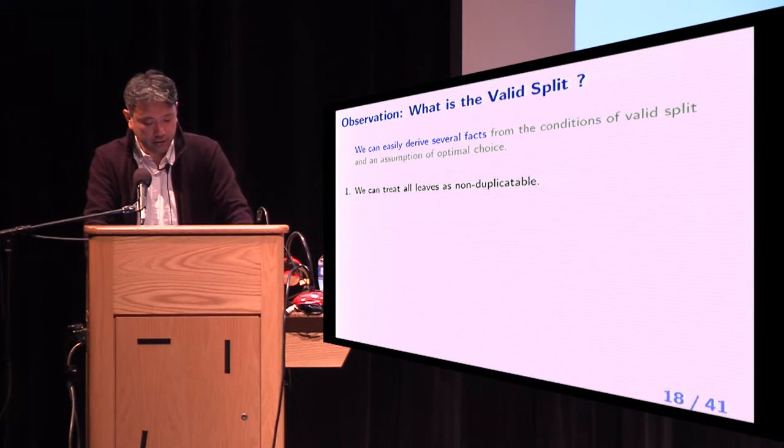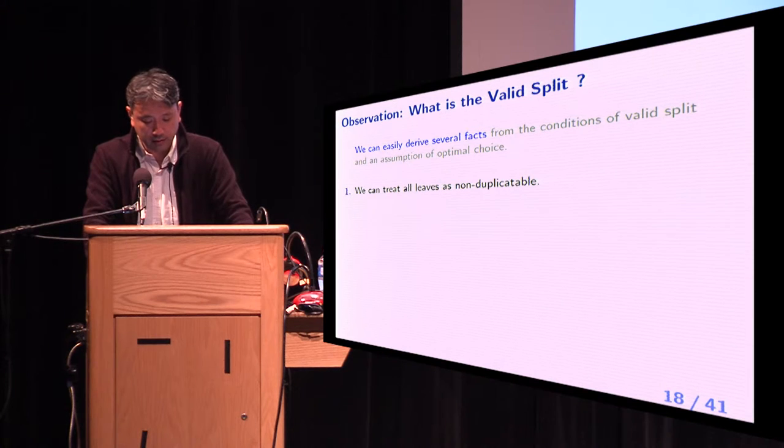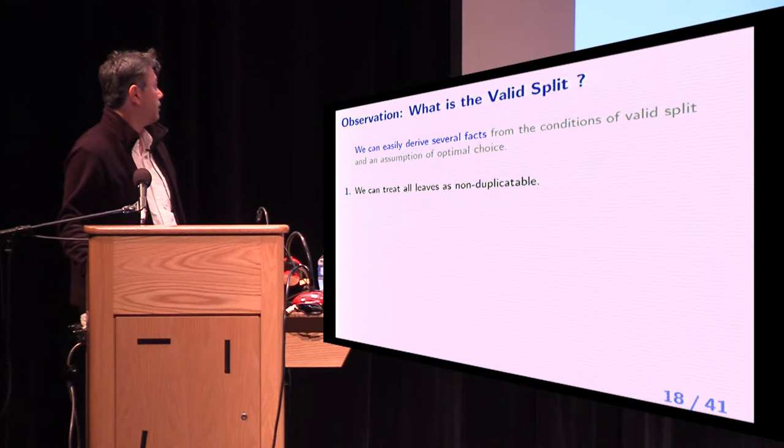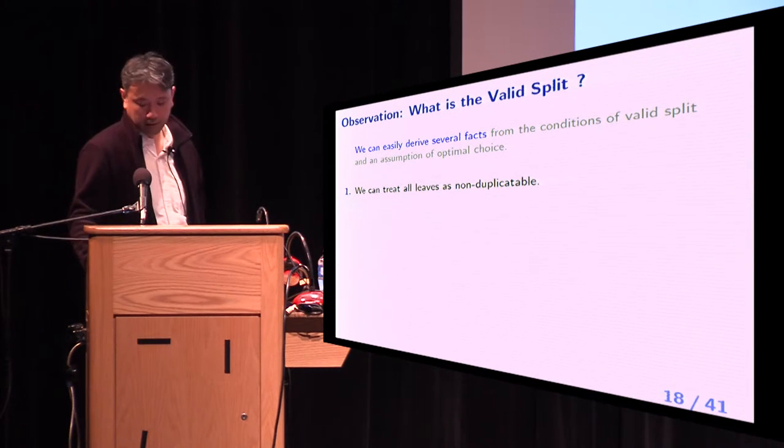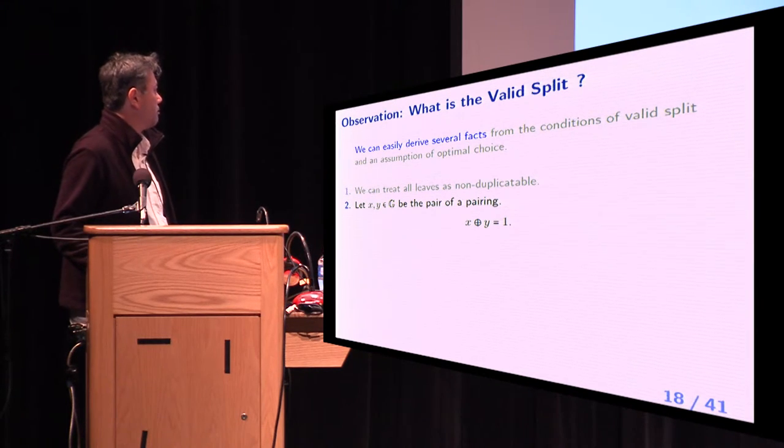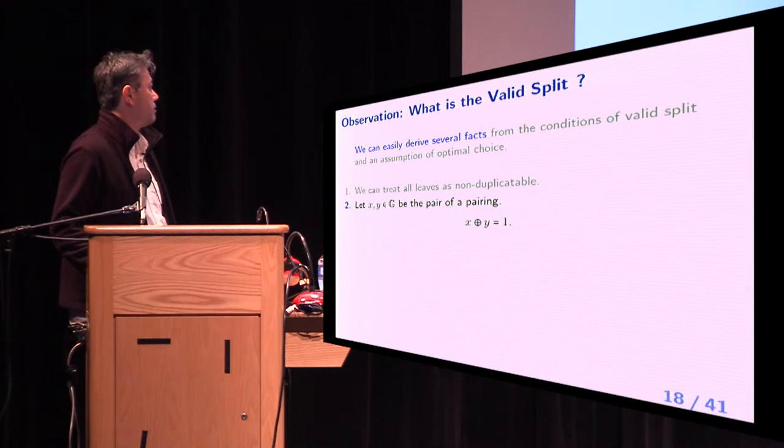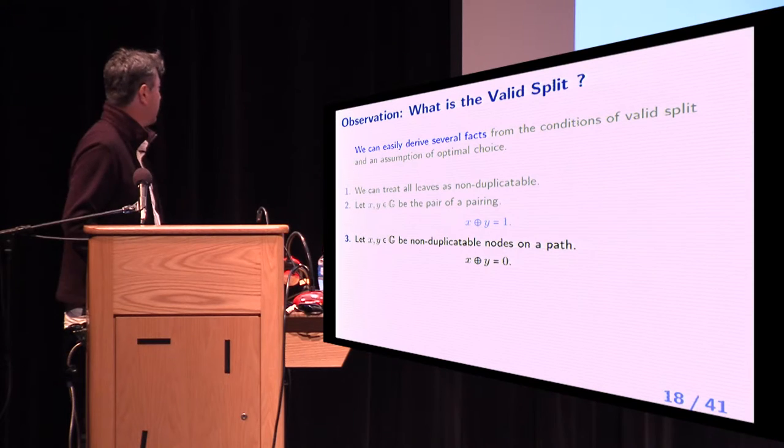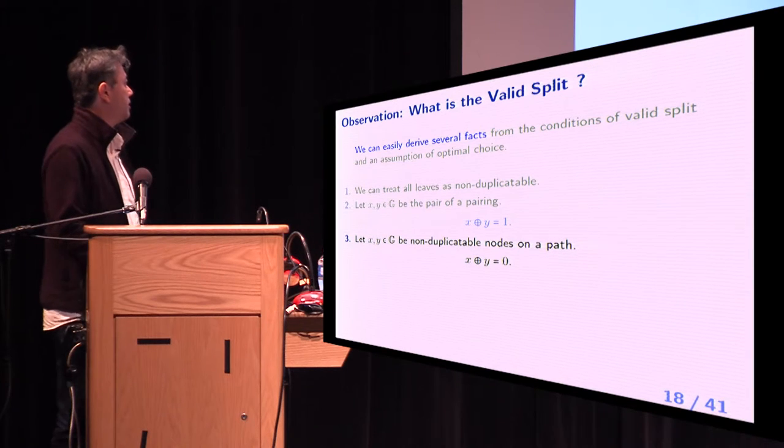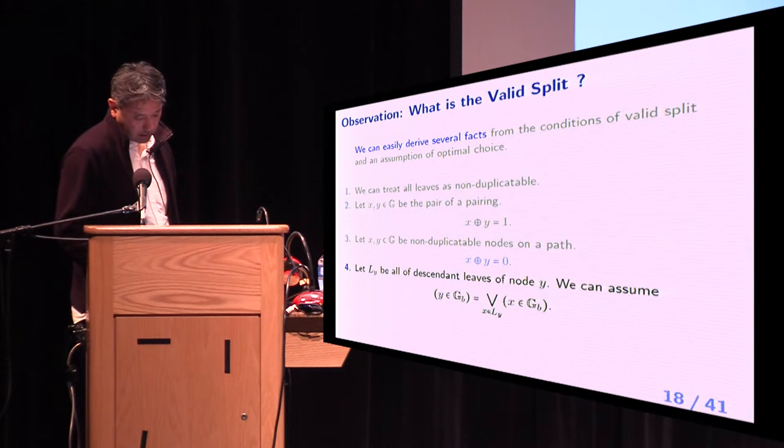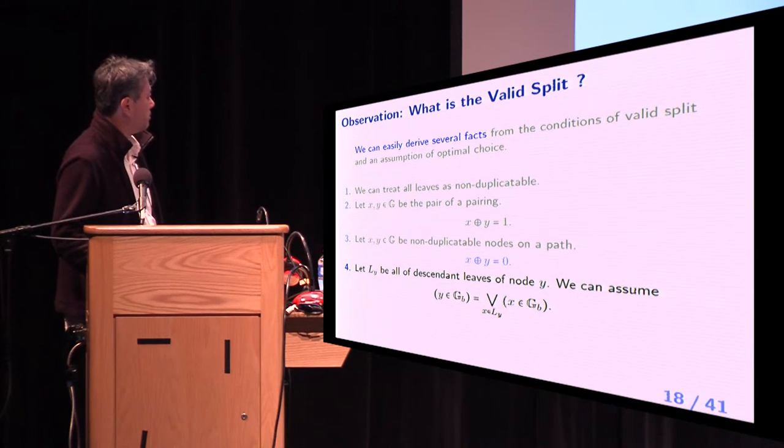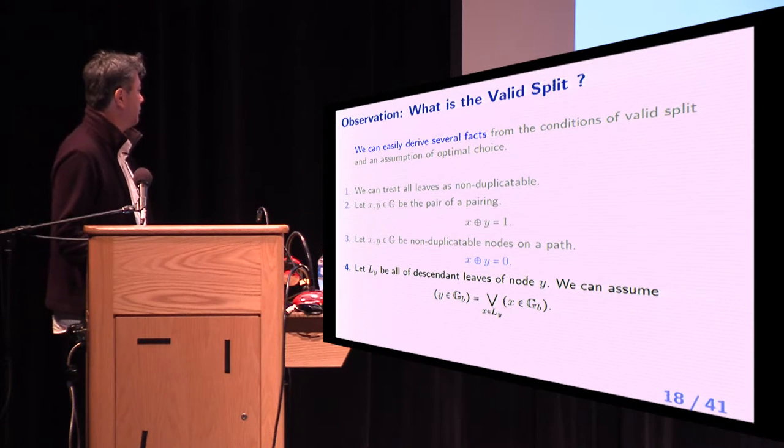I will skip detailed discussion, but we can easily derive several facts from the conditions of valid split. Fact 1, we can treat all leaves as non-duplicatable. Fact 2, let X, Y be the pair over pairing. This equation holds. Fact 3, let X, Y be non-duplicatable nodes on a path. This equation holds. Fact 4, let Y be all of the descendant values of node Y. We can assume this equation.